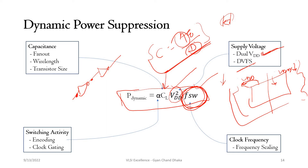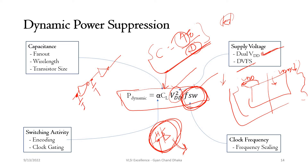At the transistor level, there will be input and output capacitances — gate-to-source and drain-to-source capacitance effects. For an inverter, there is output capacitance, and additional inverters connected to that output add their input capacitances in parallel, increasing the load. If we decrease the fan-out, the output load capacitance decreases, and with it the dynamic power.